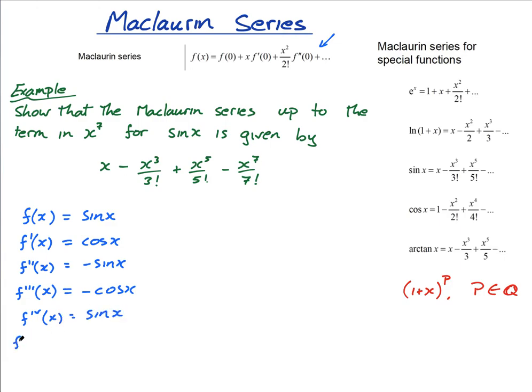The fourth derivative is back to sine, so then it just repeats itself. The fifth derivative is cos x.